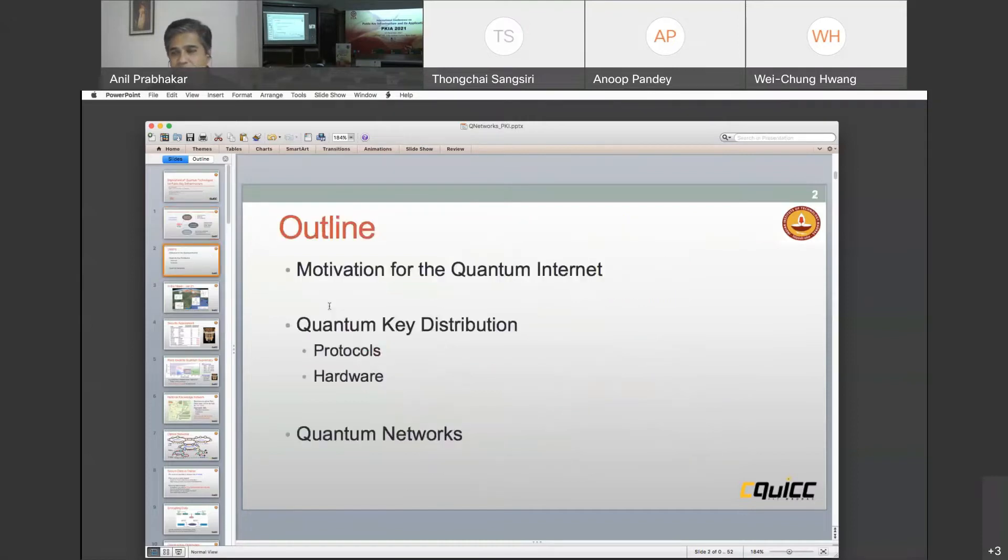The brief outline of my talk is the motivation for the quantum internet and its implications on public key infrastructure. One of the main underlying cornerstones of the quantum internet is what we call quantum key distribution. I will spend a little time telling you about the protocols and the hardware requirements. Then I will conclude by talking about the quantum networks themselves and how we envisage that they will come through in India.